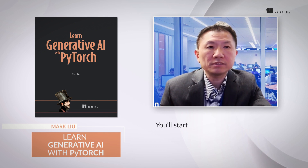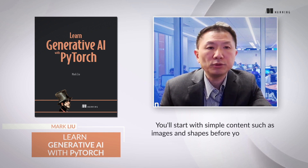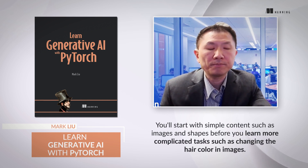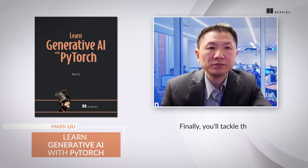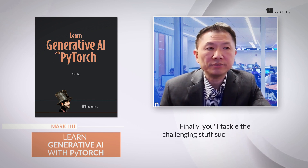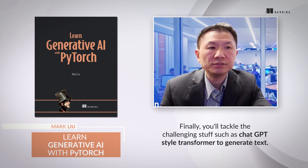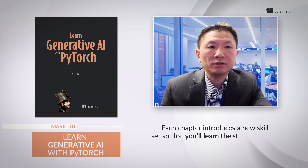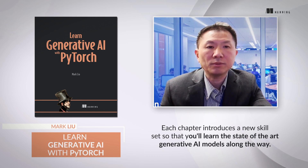You'll start with simple content such as images and shapes, before you learn more complicated tasks such as changing the hair color in images. Finally, you'll tackle the challenging stuff such as a ChatGPT style transformer to generate text. Each chapter introduces a new skill set, so that you'll learn the state-of-the-art generative AI models along the way.